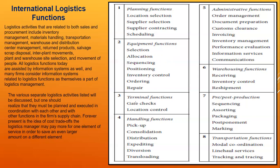Point three is terminal functions: gate check, control, and location control. Nowadays shipments are tracked in real-time so customers can be informed of their order status and can track it directly themselves. Handling functions include pickup, consolidation, distribution, expanding, diversion, and trans-loading — these are all important functions of international logistics.